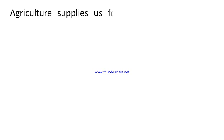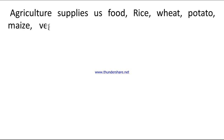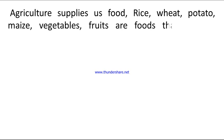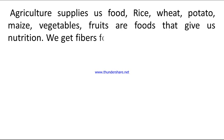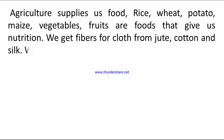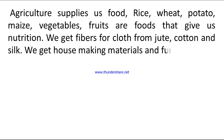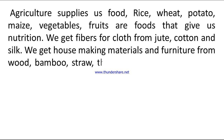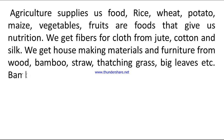Agriculture supplies us food — rice, wheat, potatoes, maize, vegetables, and fruits — that give us nutrition. We get fibers for cloth from jute, cotton, and silk. We get house-making materials and furniture from wood, bamboo, straw, chasing grass, and big leaves, etc.